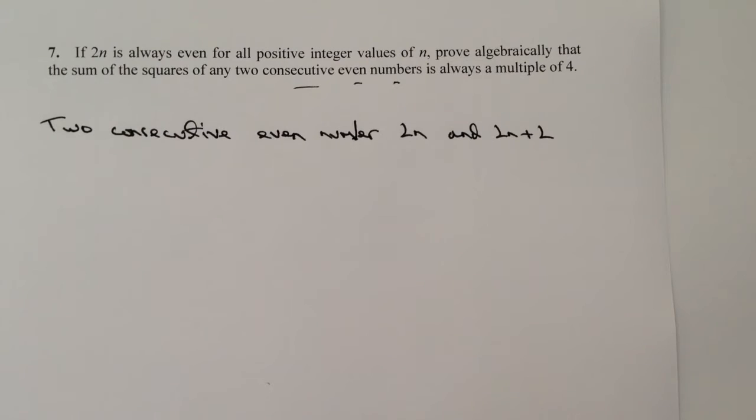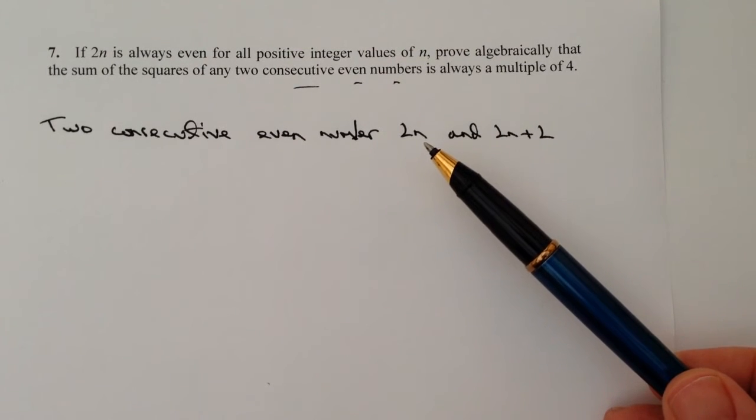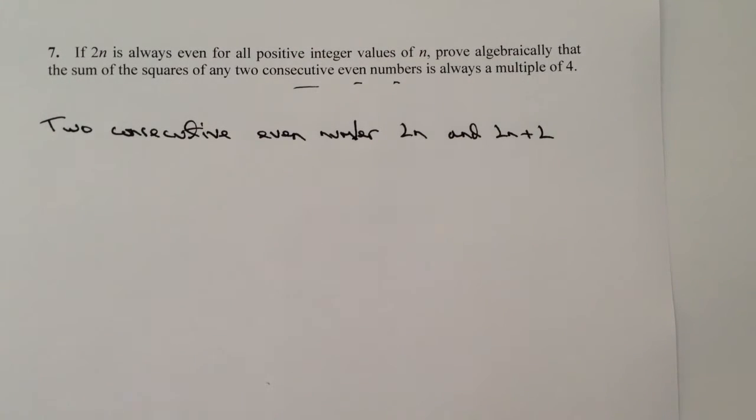Now if you're not sure about that, then you might want to refer through to some of the earlier questions. These are A-star grade, so they are quite tricky sometimes to get your head around. But 2n means that if I have a number, let's say 3, then it must be an even number because 2 times 3 is 6. Likewise, if I have a number like 8, then 2 times 8 is going to be 16, so that must be an even number always. And 2n plus 2 is going to be the next one afterwards.